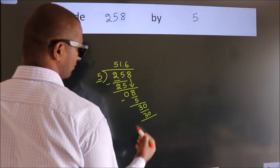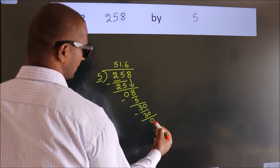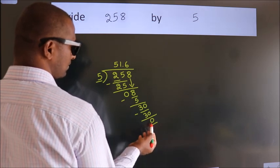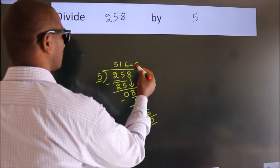Now we subtract. We get 0. We got remainder 0. So this is our quotient.